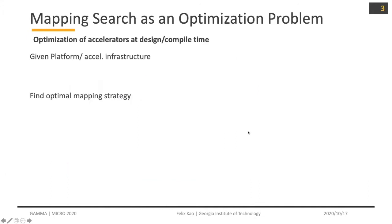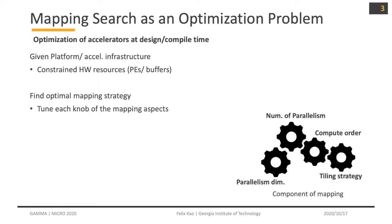So our problem becomes: given a platform infrastructure, we want to find the optimal mapping strategy. It means the hardware resource is constrained, like PE, local, and global buffer. We want to tune each knob of the mapping aspect, like number of parallelism, compute order, tiling strategy, and parallelism dimension.